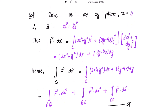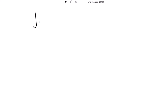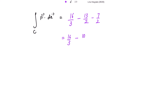Combining all three results: the integral over C of F·dr = (along AB) 16/3 + (along BC) −13/2 + (along CA) −7/2 = 16/3 − 10 = 16/3 − 30/3 = −14/3. This is the required answer.